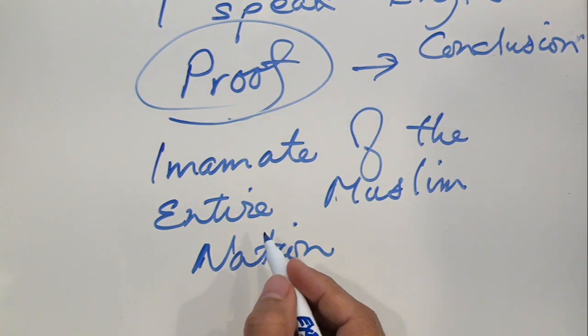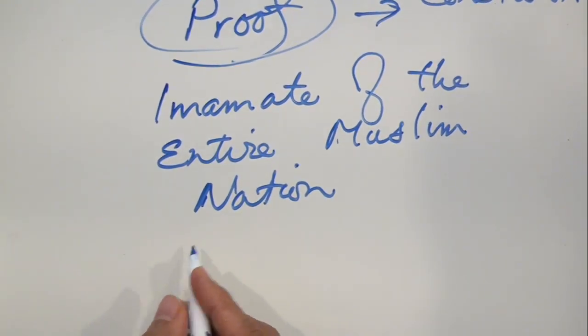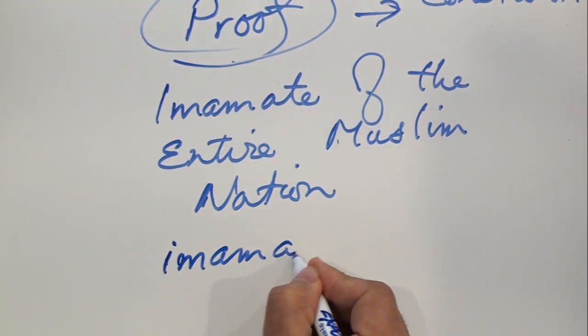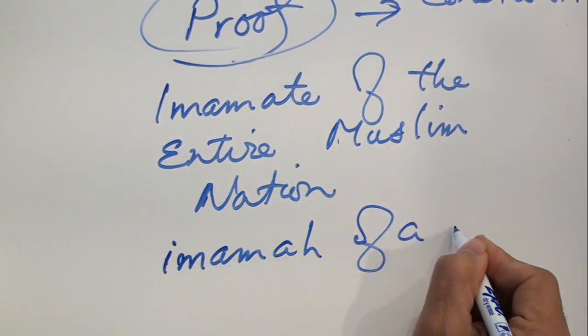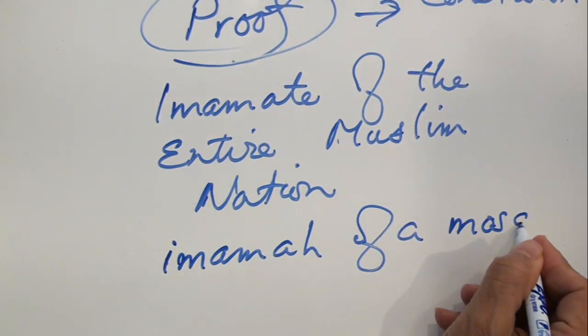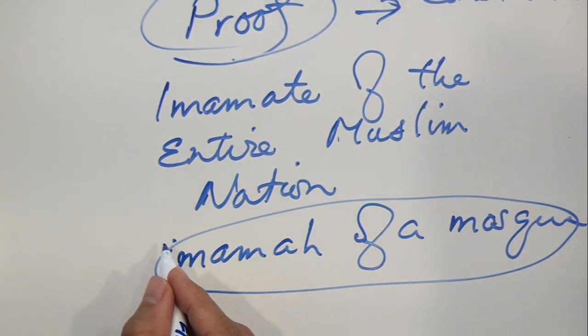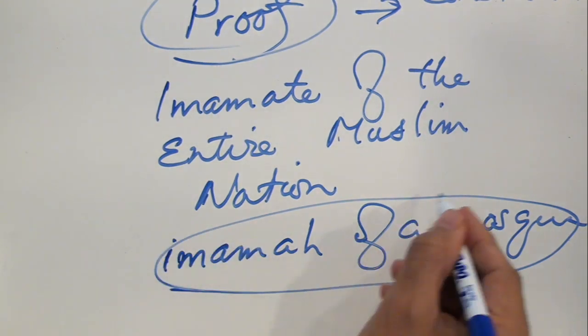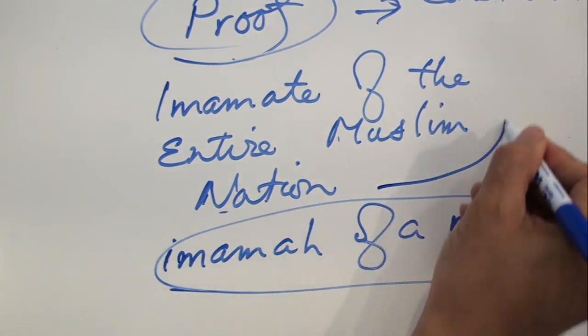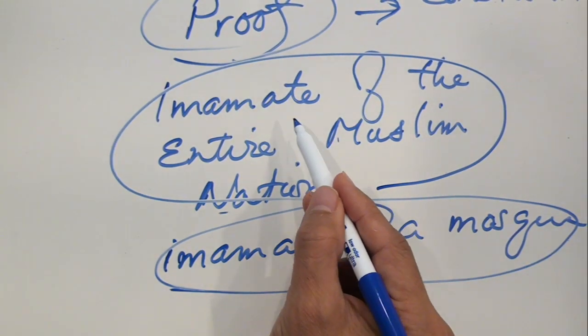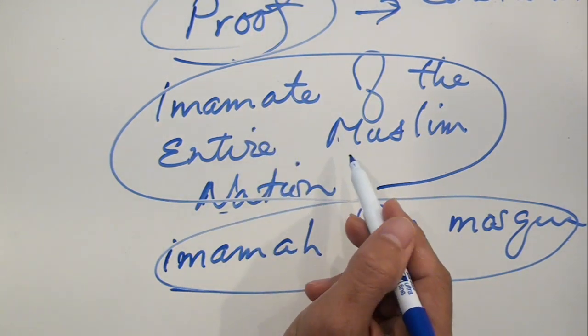And what the Umaris come up with is the imamah of a masjid, and even that is questionable because the guy was fired from that. But let's say he was not fired. The imamah of a mosque—so the imamah of a mosque, even if it's the mosque of the Nabi sallallahu alayhi wa sallam, does not lead one to believe, does not mean, is not a sufficient proof to prove the desired conclusion, which is the imam of the entire Muslim nation.